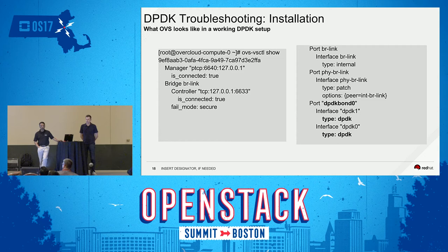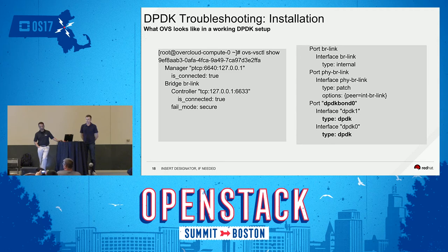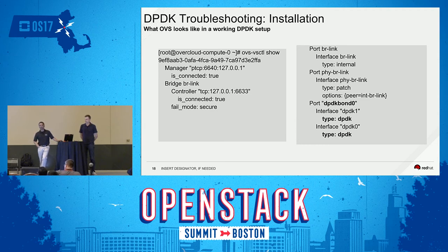During installation, if your install went well, this is what the DPDK setup should look like. In our case we have a bond, so you will see the port mentioned as dpdk-bond0 and it has two interfaces: dpdk1 and dpdk0. This is what a healthy installation should look like. There are some interesting things — if you make mistakes in the YAML file, like having extra spaces between commas, it could lead to issues. That gets fed into the command line which fails silently and you'll never know about it. But if it's healthy and everything went well, this is what it looks like.